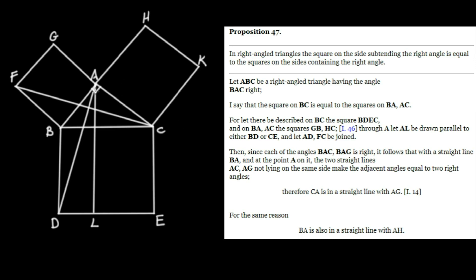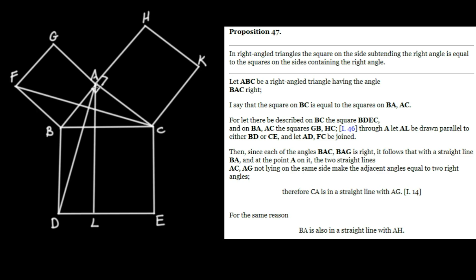Next, we're going to ensure that some of the lines in our diagram are actually in line with each other. Since each of the angles BAC and BAG is right, it follows that with straight line BA and point A on it, the two straight lines AC and AG, not lying on the same side, make the adjacent angles equal to two right angles. Therefore, CA is in a straight line with AG, by Proposition 14. And for the same reason, BA is in a straight line with AH, since angles BAC and CAH are both right angles.